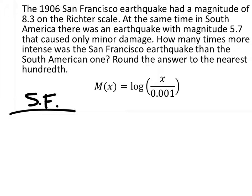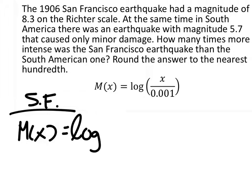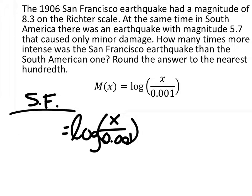Let's look first at San Francisco. It had an 8.3 Richter reading. So in the formula M of X equals log of X over 0.001, we're replacing M of X — because that is the Richter reading. So I'm going to replace M of X with 8.3 for San Francisco.